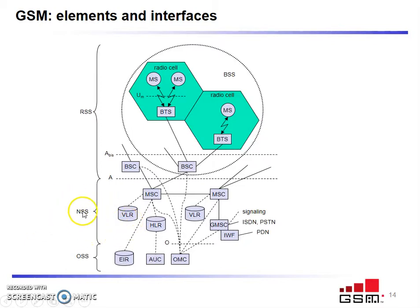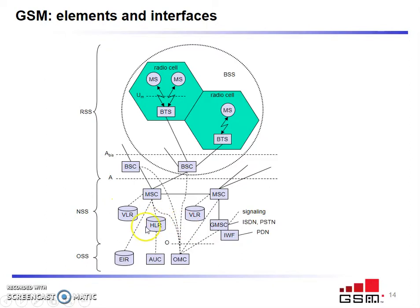In the network subsystem we have various MSCs, and these MSCs control different BSCs. One MSC can be in charge of more than one BSC. The network subsystem has VLR and HLR, where VLR stands for Visitor Location Register and HLR stands for Home Location Register. The basic data of the user of the mobile station is saved in the home location register, and when the user moves from one cell to a different cell, the visitor location register gets updated.